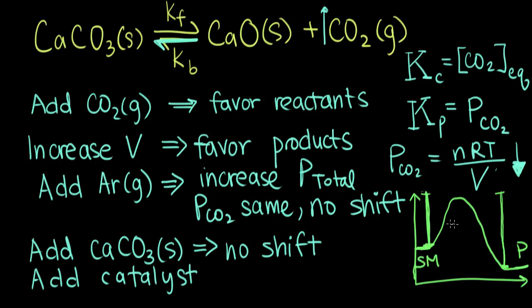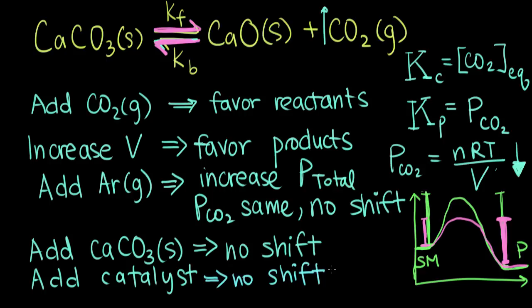If we add a catalyst to our reaction, we can think about it as lowering the activation energy. That means we have a lower energy barrier for the forward reaction, so the forward reaction gets faster — but it also lowers the barrier for the backward reaction, so k_backward speeds up too. Since it speeds up both the forward and the backward reactions equally, adding a catalyst also won't perturb your reaction from equilibrium, and adding a catalyst will result in no shift in concentrations.